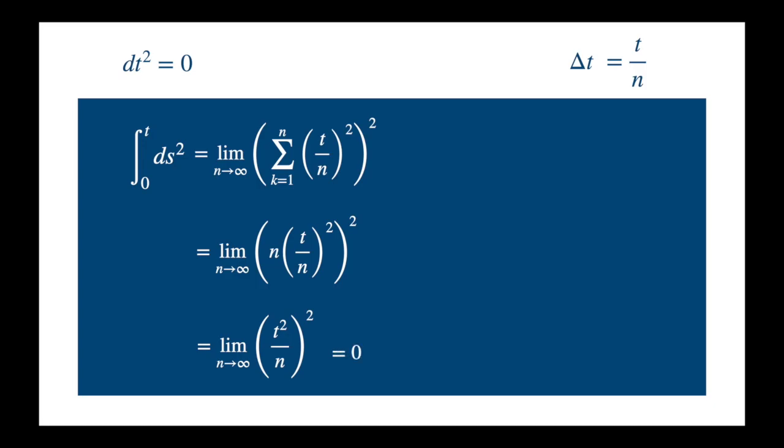And this is what they mean when they say dt squared is equal to 0. So this is how the magic recipe works.